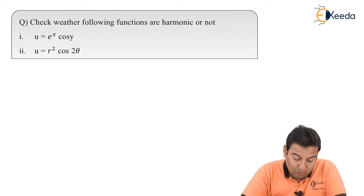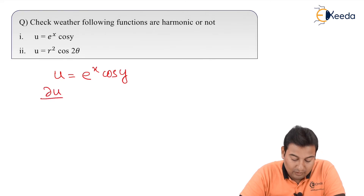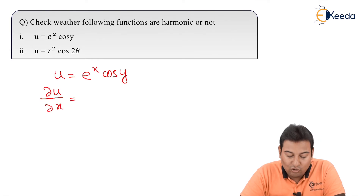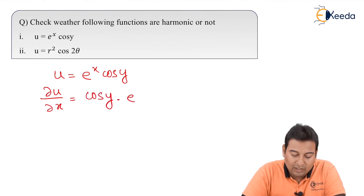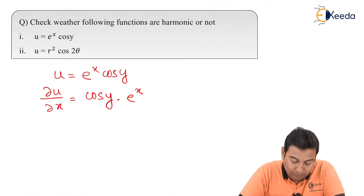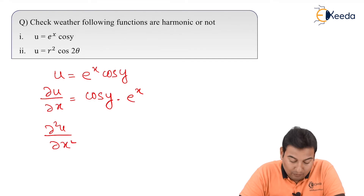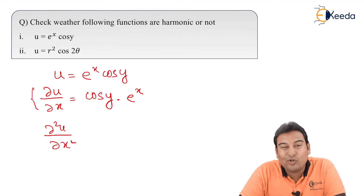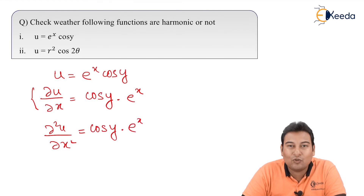The first example: u = e^x cos y. Let us differentiate with respect to x. ∂u/∂x — with respect to x, y is constant so cos y is constant, and e^x derivative is e^x. So ∂u/∂x = e^x cos y. Now differentiating again with respect to x: cos y is constant, e^x derivative is e^x. So ∂²u/∂x² = e^x cos y.